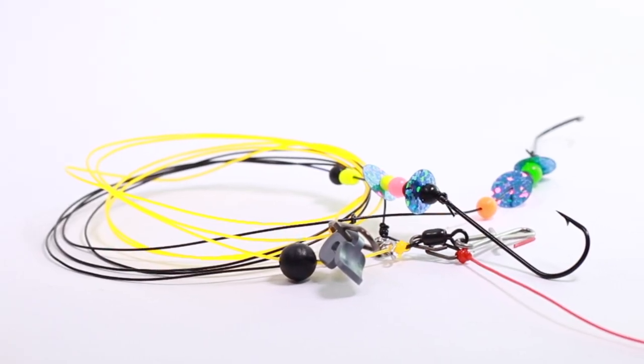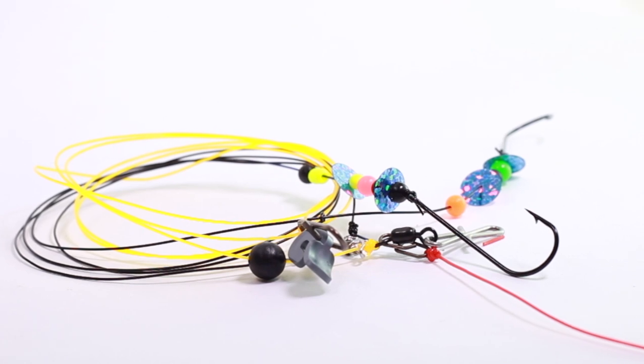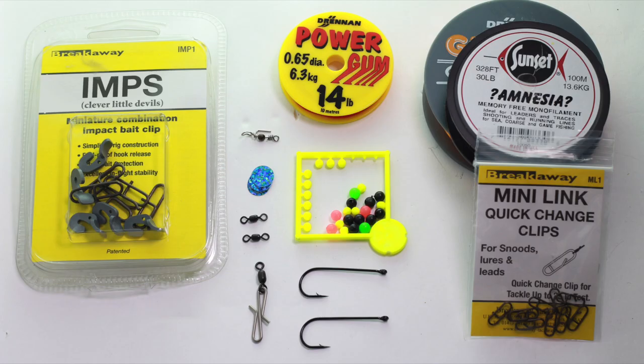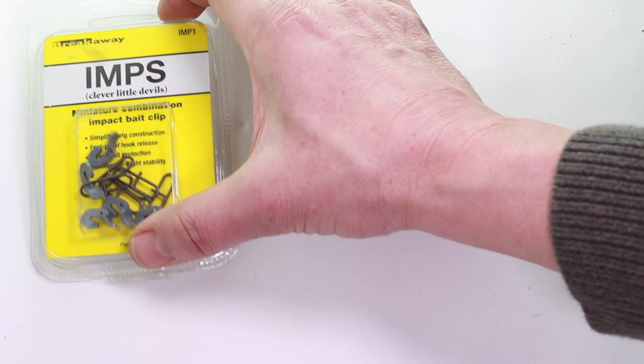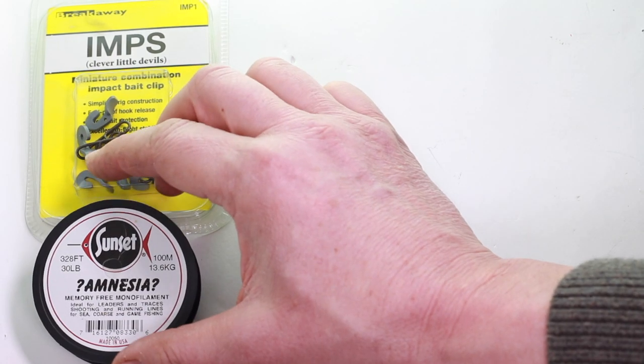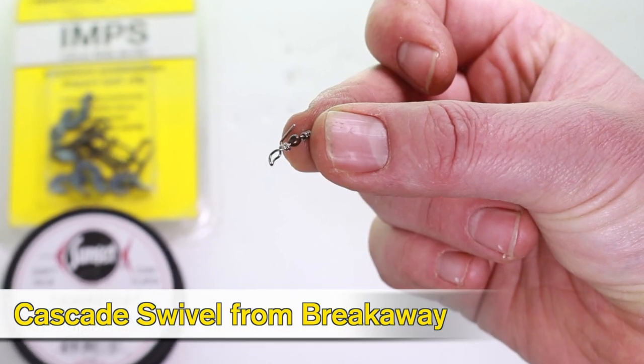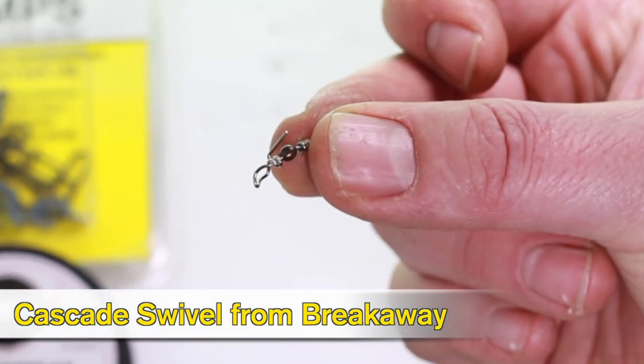We're going to tie Ada's Sliding Wishbone rig using those bits of equipment. It utilizes a lot of Breakaway tackle. Those are the imps we're going to be using. You need some Amnesia, a cascade swivel from Breakaway - the central part of this rig.